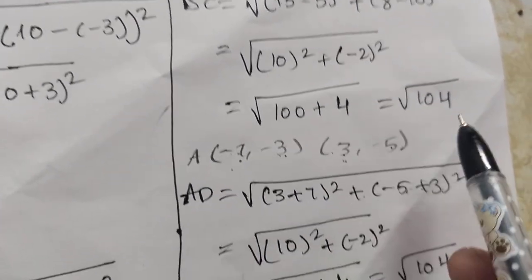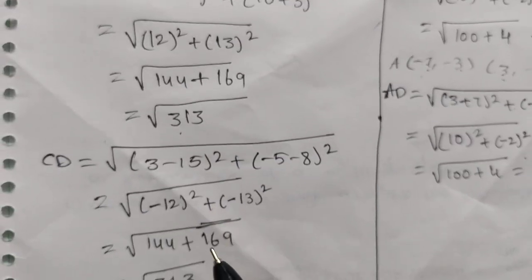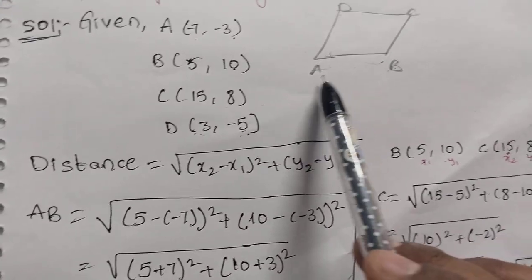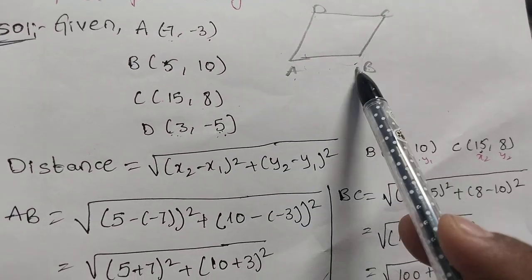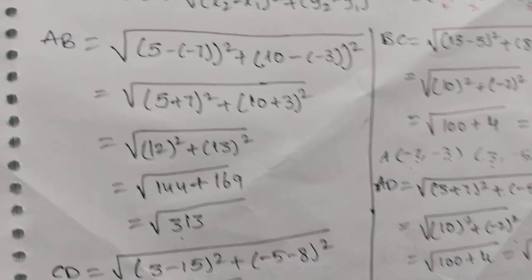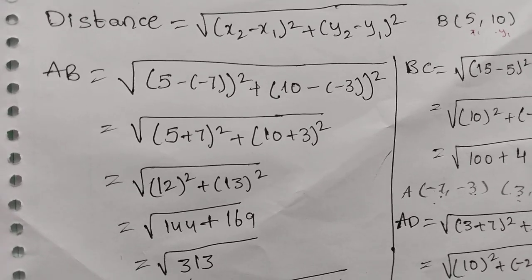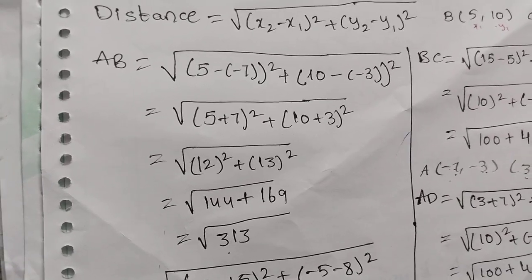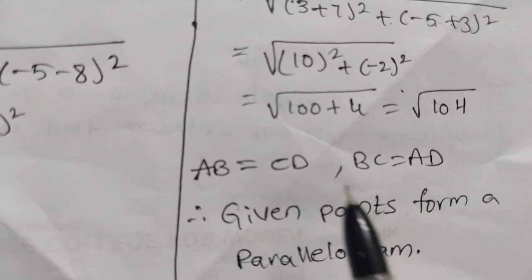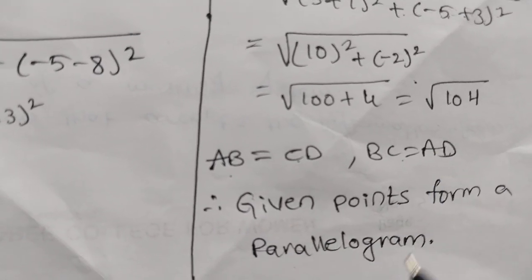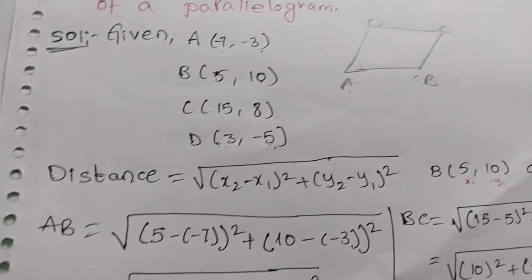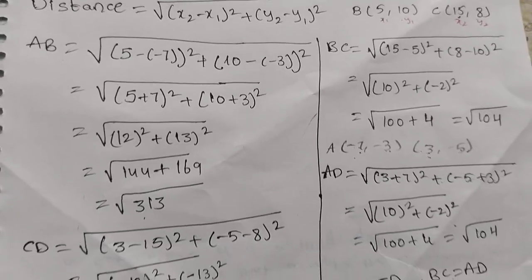So AB = CD = √313 and BC = AD = √104. The opposite sides are equal, therefore the given points A, B, C, D form a parallelogram. Hence proved. Thank you for watching.